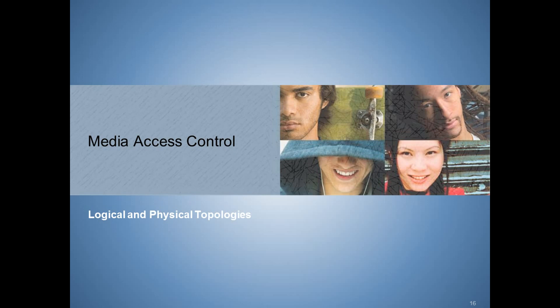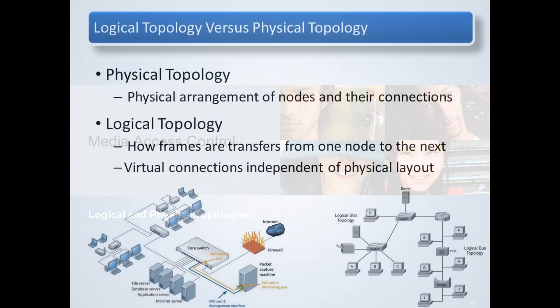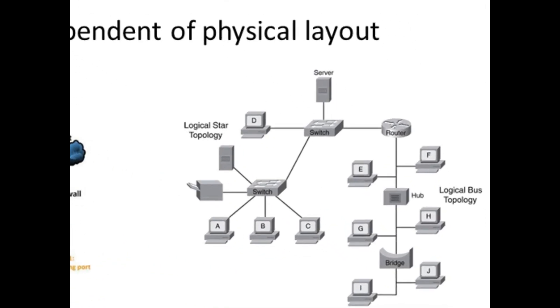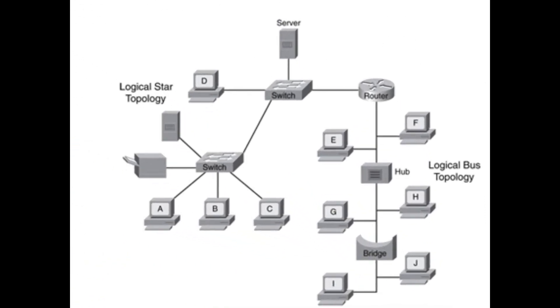The topology of a network is the arrangement or relationship of the network devices and the interconnections between them. We will explore the different ways a network can be seen in the following section. You cannot tell what logical topology the data link layer sees the network as just by looking at the physical layout. A logical topology is the behavior of the network, or the way a network transfers frames from one node to the next. Logical topologies can be tricky.